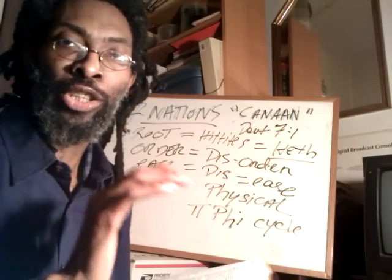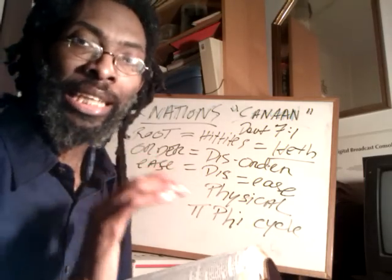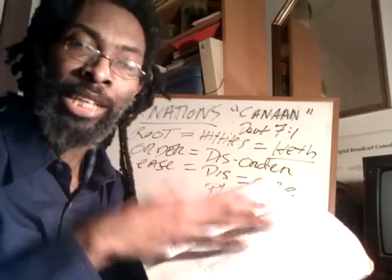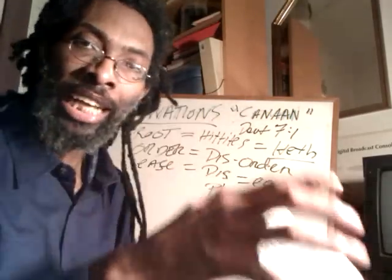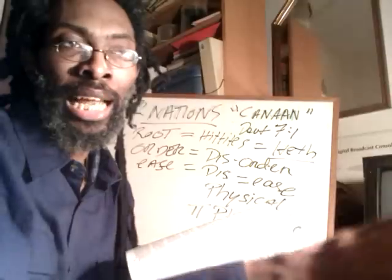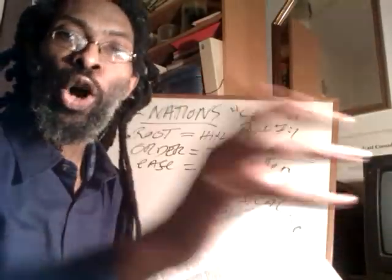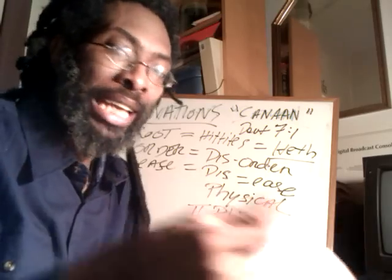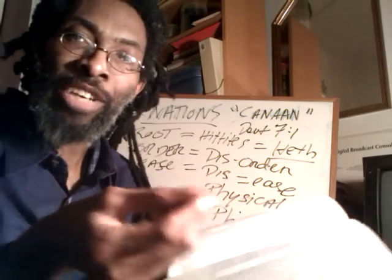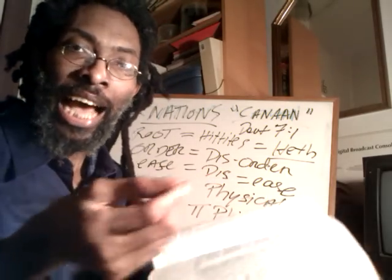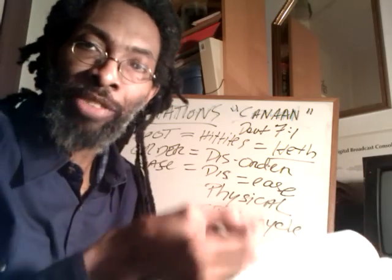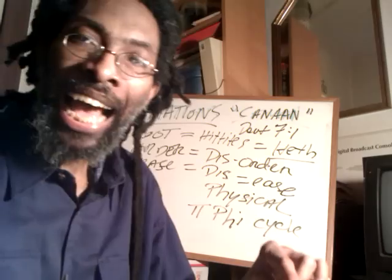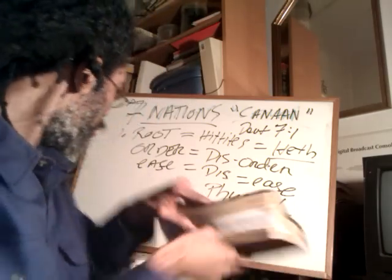Some translations say 'merchants' rather than 'Canaanites,' but we've already established that the Canaanites the Bible speaks about in Rastafari revelation are what Haile Selassie and others called the old-time pirates — those who made merchandise out of God's people, out of the lost sheep of the house of Israel.